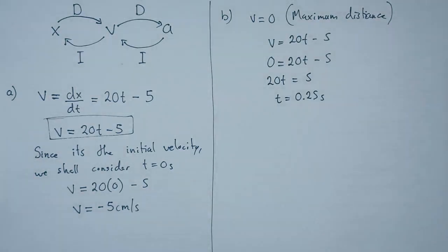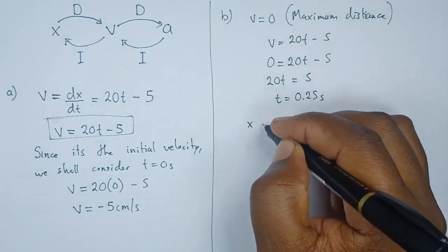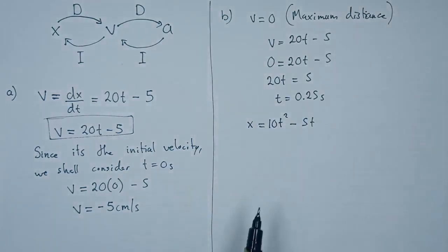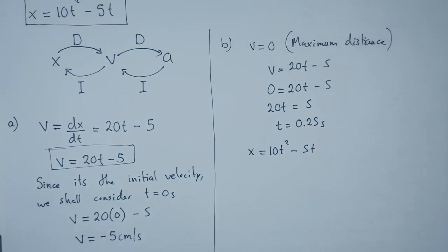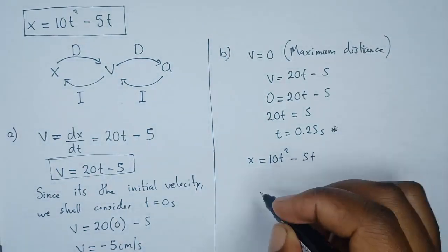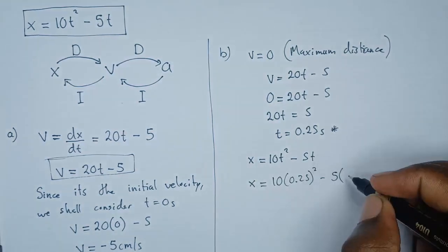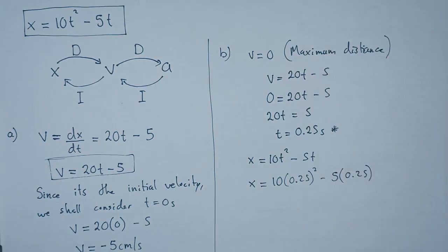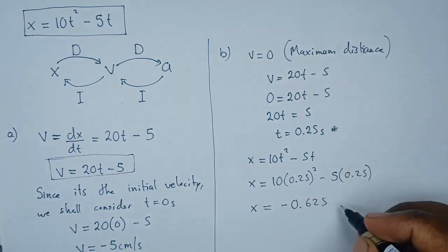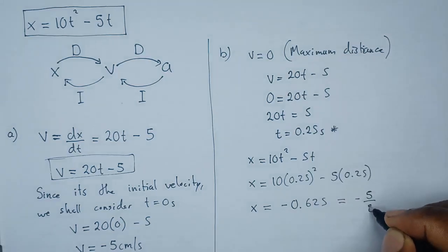Now that we have found the value of time to be 0.25 seconds, to find the maximum distance we go back to the original expression for position: x equals 10t squared minus 5t. We substitute t equals 0.25: x equals 10 times 0.25 squared minus 5 times 0.25. Computing this gives negative 0.625, or as a fraction, negative 5 over 8 centimeters.